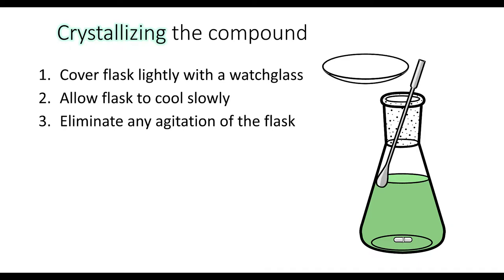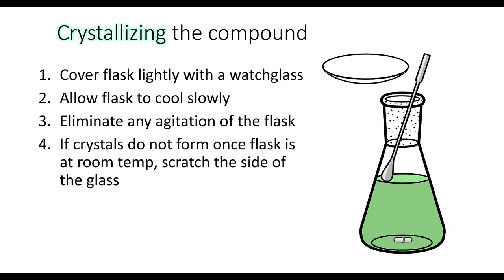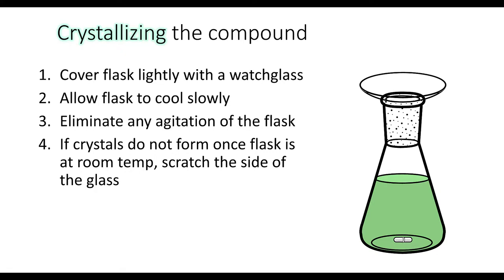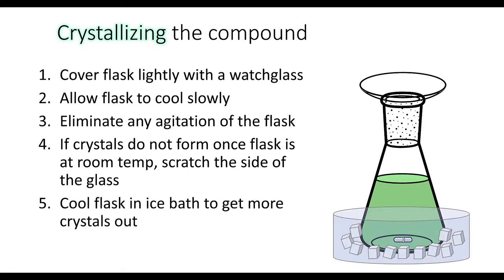Once the flask reaches room temperature, if there are still no crystals anywhere in the flask, we can use this trick of taking a spatula and scraping the side of the flask a little bit. This releases a few micro-crystals of silica from the flask and they can serve as seed crystals for our crystallization — on these tiny glass particle surfaces, the crystal can start to grow its lattice. If we want more crystals to come out of solution, we can cool the flask in an ice bath.